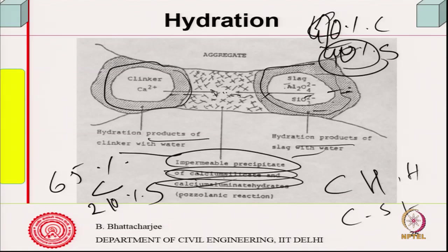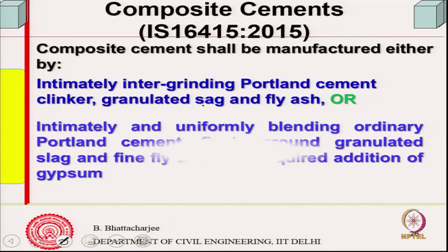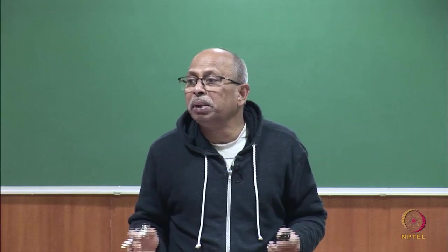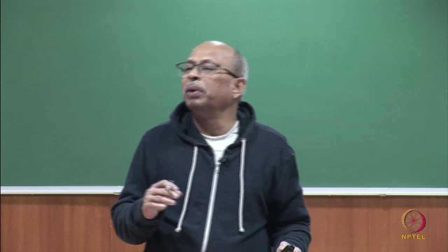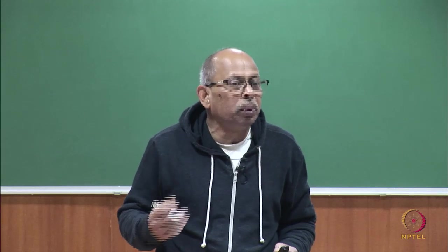This is why SCMs show better strength development in the long run and produce densified structures with less water penetration potential. From this point of view, one could have composite cements — a combination achieved by inter-grinding Portland cement clinker with granulated slag and fly ash, or by intimately blending OPC, finely ground granulated slag, and fly ash with additional gypsum. Composite cement combines all these components, allowing use of large quantities of waste materials and reducing CO₂ since lesser clinker content means less carbon dioxide production.